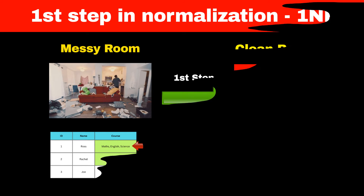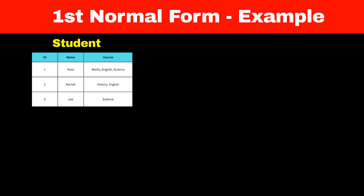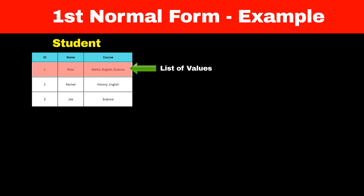Let's understand this with the help of a student table, which has three columns: ID, Name, and Course. You can see that the course column contains a list of values. For example, the student named Ross has three values in the course column: Math, English, and Science. This means the course column has a list of values — in other words, it doesn't have atomic values. So this table is violating the first normal form.